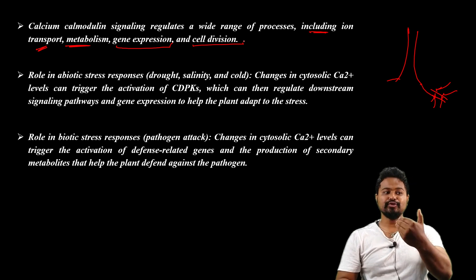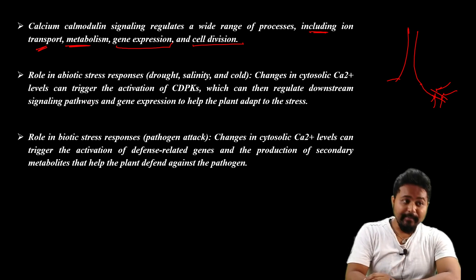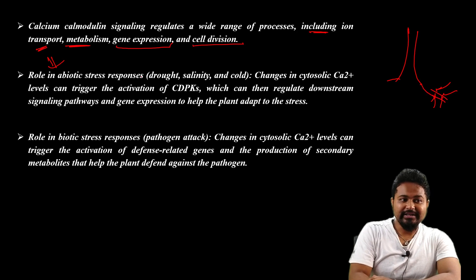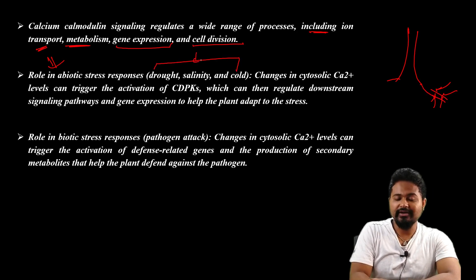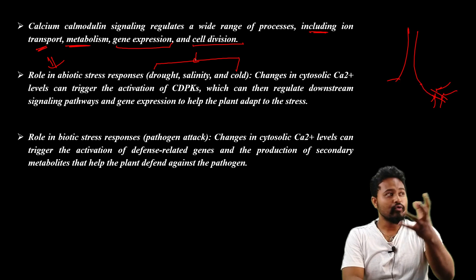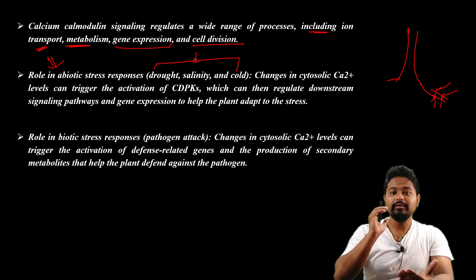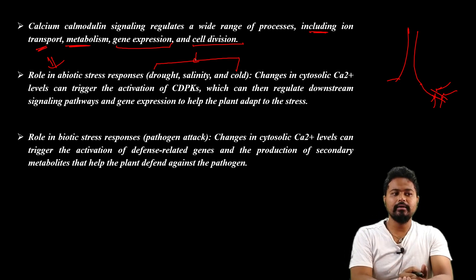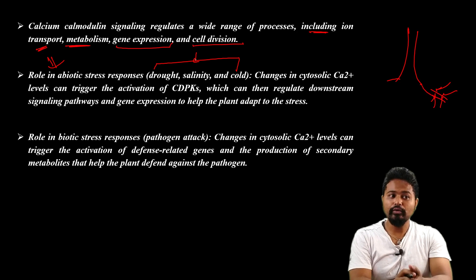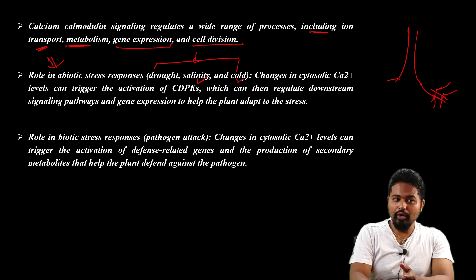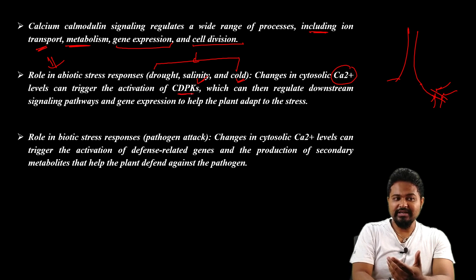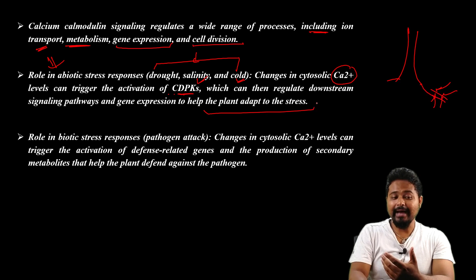This calcium-calmodulin signaling plays a role in abiotic stress — drought, salinity, and cold. Drought means dryness, which is very important. Changes in cytosolic calcium levels can trigger the activation of CDPK — calcium-dependent protein kinase — which can then regulate gene expression to help the plant adapt to stress.